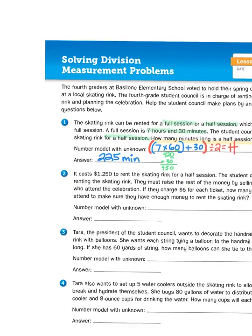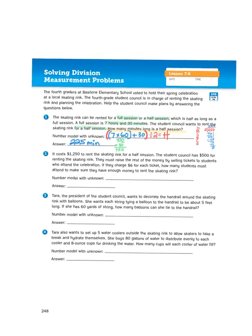Now let's try another problem. I'm going to jump into number 3, because this one deals with linear measurement. Tara, the president of the student council, wants to decorate the handrail around the skating rink with balloons. She wants each string tying a balloon to the handrail to be about 5 feet long. If she has 60 yards of string, how many balloons can she tie to the handrail? So what we need to know is how many feet are in a yard. And if I look at my conversion table on the inside front cover, it tells us that there are 3 feet to 1 yard.